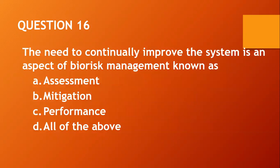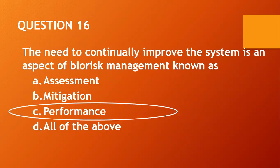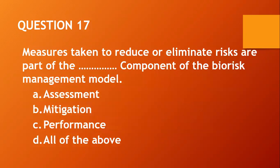Question sixteen: The need to continually improve the system is an aspect of risk management known as: A, assessment; B, mitigation; C, performance; D, all of the above. I would go with C, performance. Question seventeen: Measures taken to reduce or eliminate risk are part of the dash component of biorisk management: A, assessment; B, mitigation; C, performance; D, all of the above. I would go with B, mitigation.